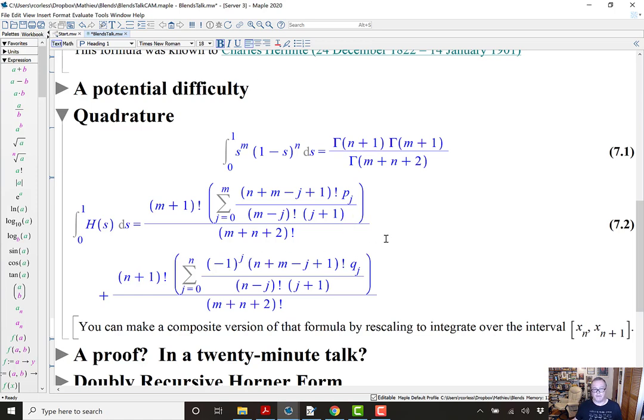And, of course, you can make a composite version of this formula by rescaling and integrating. Instead of from s equals 0 to 1, you integrate over the integral xn to xn plus 1. And, if you have m equals n equals 0, then you just get the trapezoidal rule. If you have m equals n equals 1, you get what's known as the corrected trapezoidal rule. For larger values of m and n, there are no names to the rules. But, there's an infinite family of them.